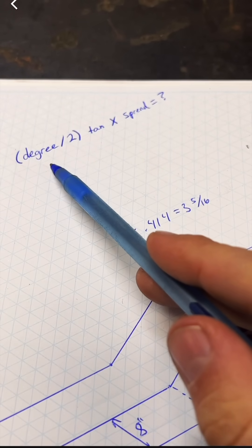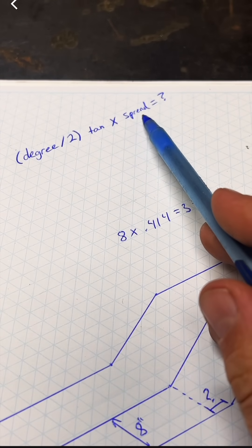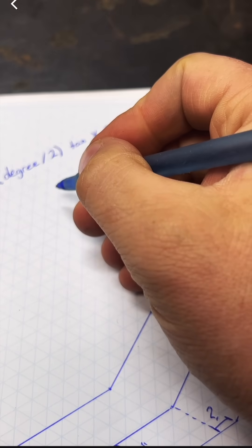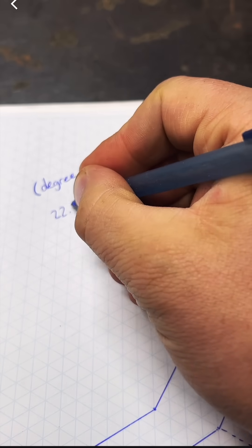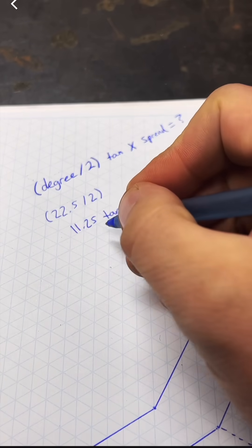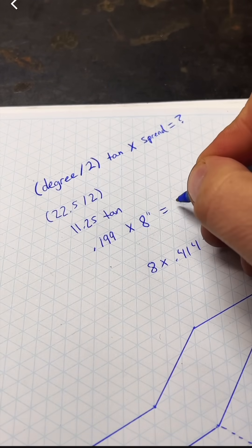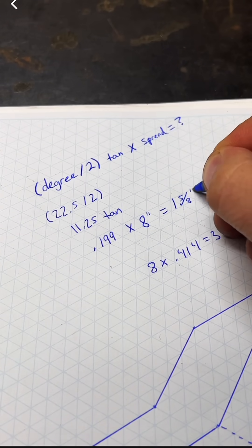Take the degree of your offset, divide it by two, then hit the tan or tangent button on your phone or calculator. Then multiply that number by your center to center measurement. So for a 22.5 degree offset, we're going to divide by two - that's 11.25 - then hit the tan button. That comes out to 0.199. Then multiply by my eight inch center and I'll need to stagger my pipes by one and five eighths inches.